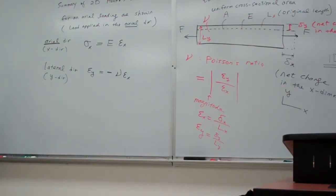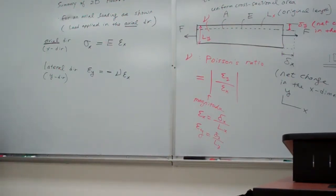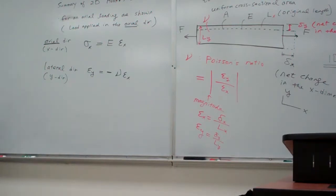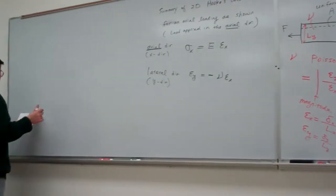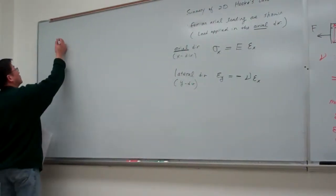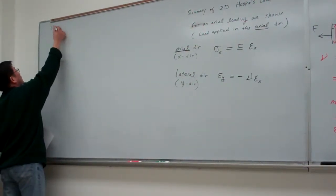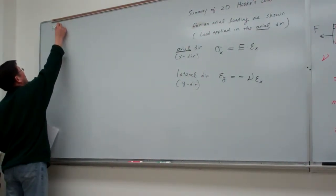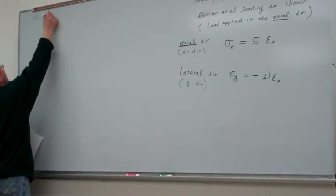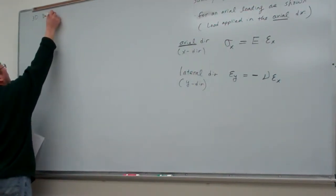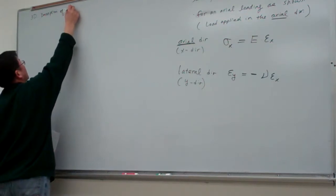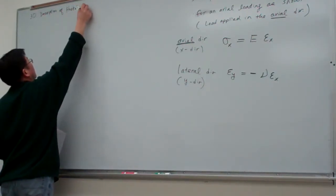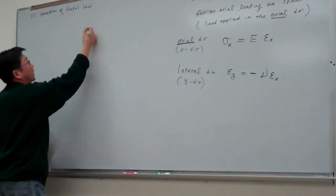The axial direction is the direction in which the load is applied — that is a key terminology. With those concepts in mind, we can build up the three-dimensional description of Poisson's ratio.